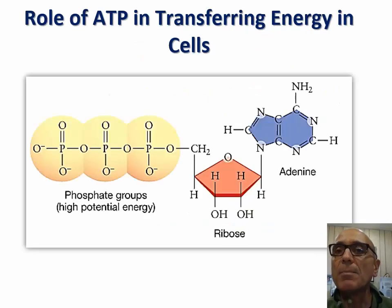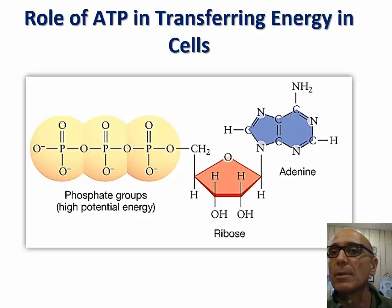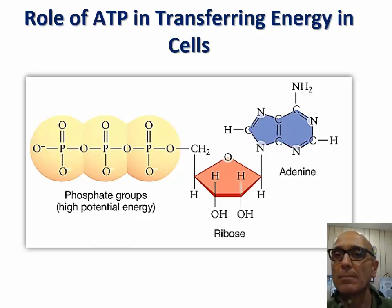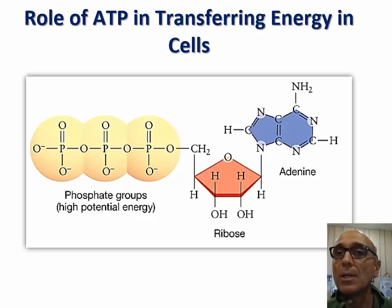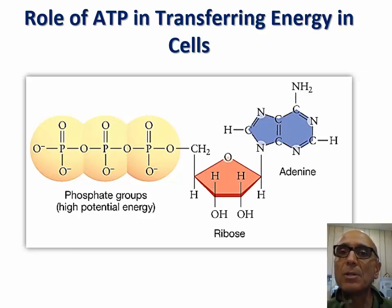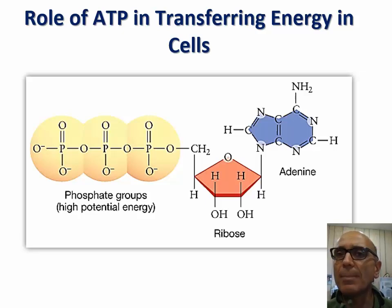Through hydrolysis, ATP provides energy to the cell through the transfer of phosphate groups to other molecules. This process is known as phosphorylation. It is important to emphasize that the energy transfer does not occur through simple hydrolysis. If that was the case, then most of the energy released would be heat, and therefore not useful to the cell.